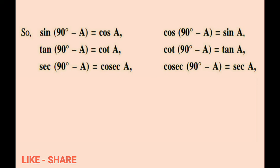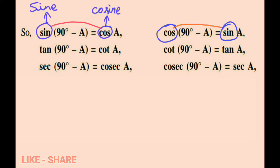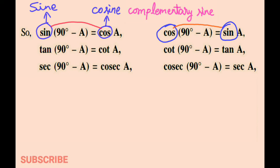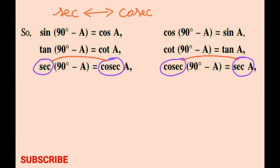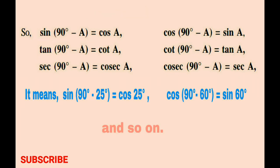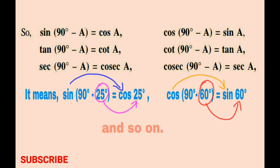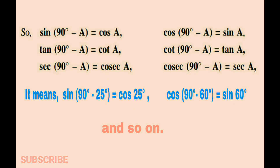The easy way to remember this is: for sin, we take cos — cos means complementary of sin. For tan, we take cotan. For secant, we take cosecant. We can use these relations as follows: sin(90° − 25°) is equal to cos 25°. Cos(90° − 60°) is equal to sin 60°, and so on.